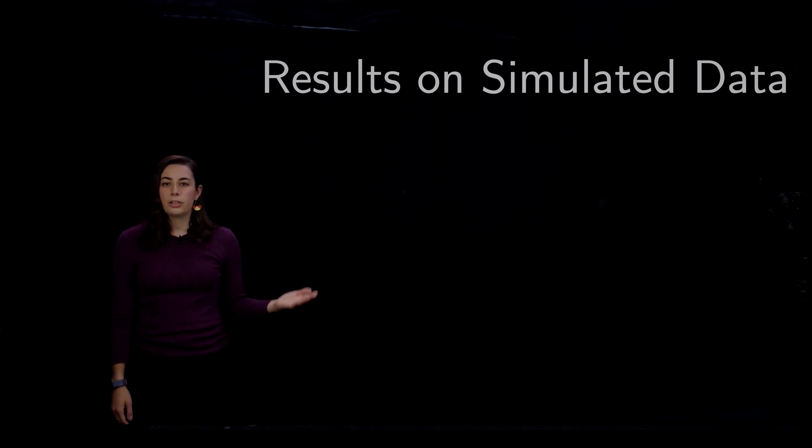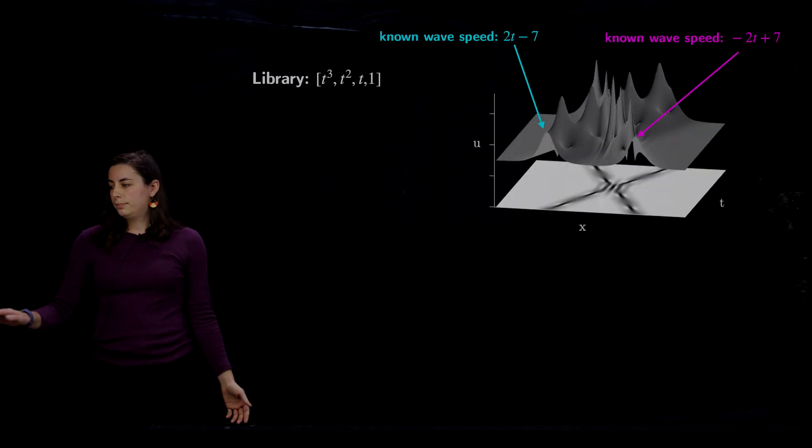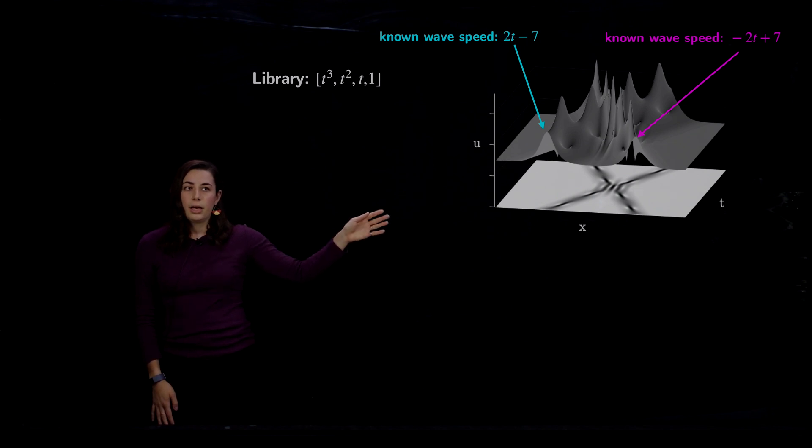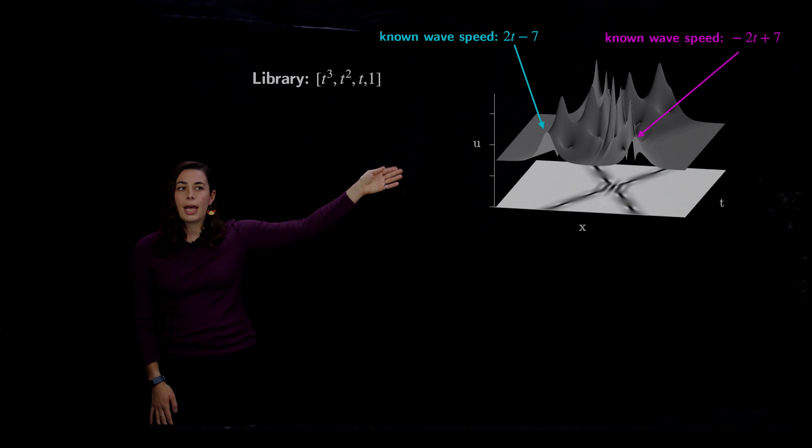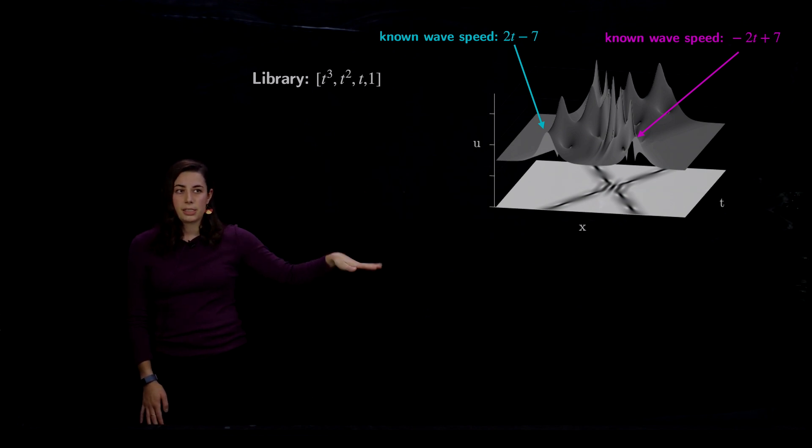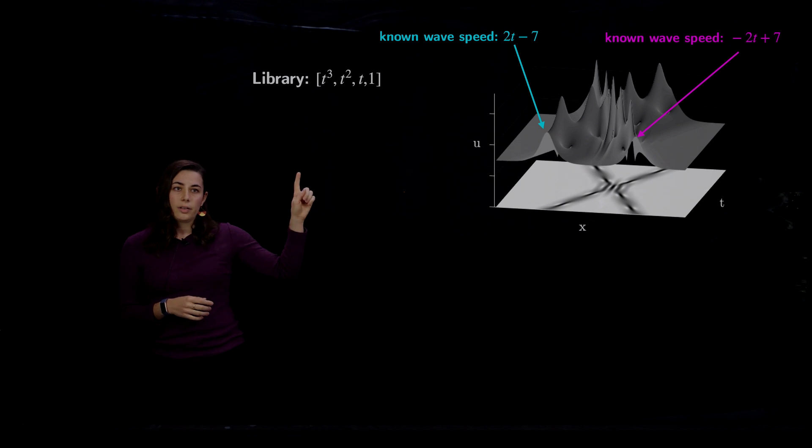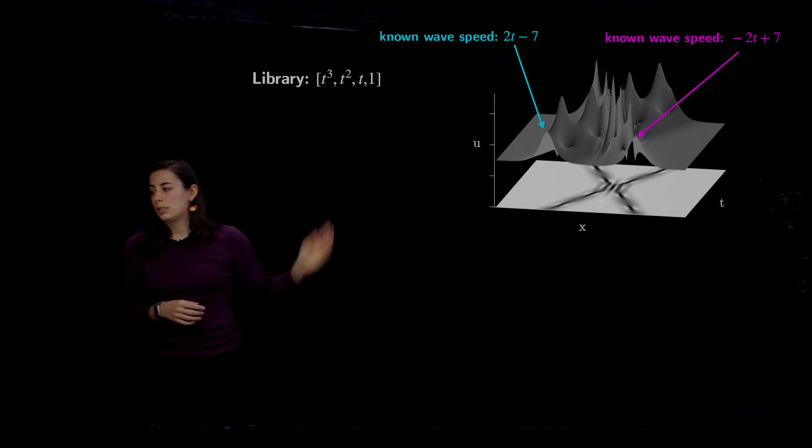So now that I've gone through my method, I'm going to show you one example on simulated data. So here we have the nonlinear Schrödinger equation that I have initialized with an initial condition that gives us wave speeds 2T minus 7 and negative 2T plus 7. The nonlinear Schrödinger equation exhibits this breathing phenomenon, and it also has nonlinear interactions between the two waves that are intersecting. So this is a pretty complex system that is a good test case for our method.